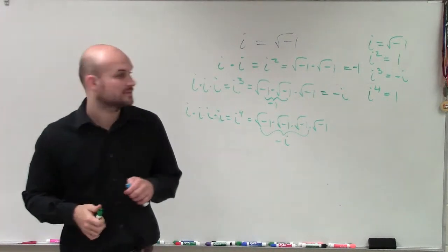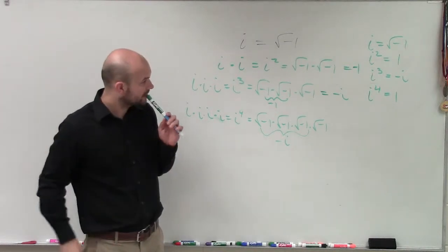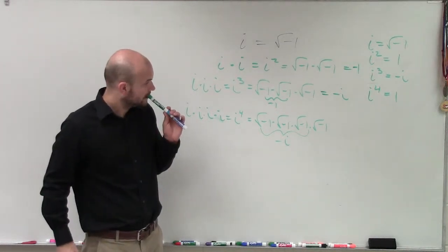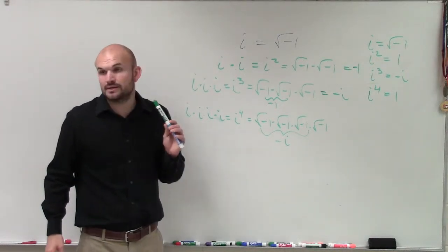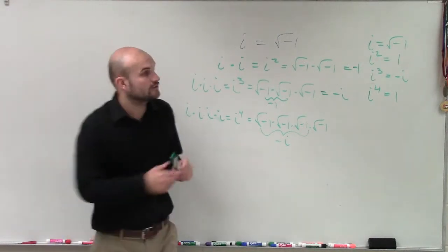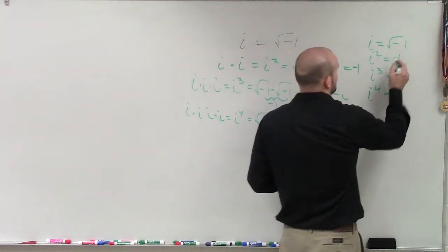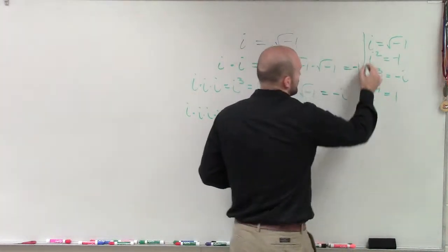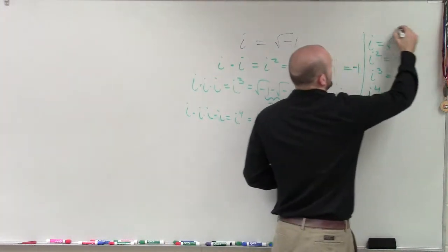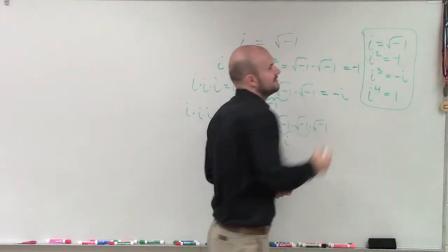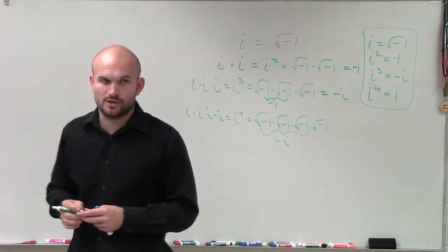Note that i squared equals negative 1 — that belongs in the chart too. So the pattern you want to learn is: i equals square root of negative 1, i squared equals negative 1, i cubed equals negative i, and i to the fourth equals 1.